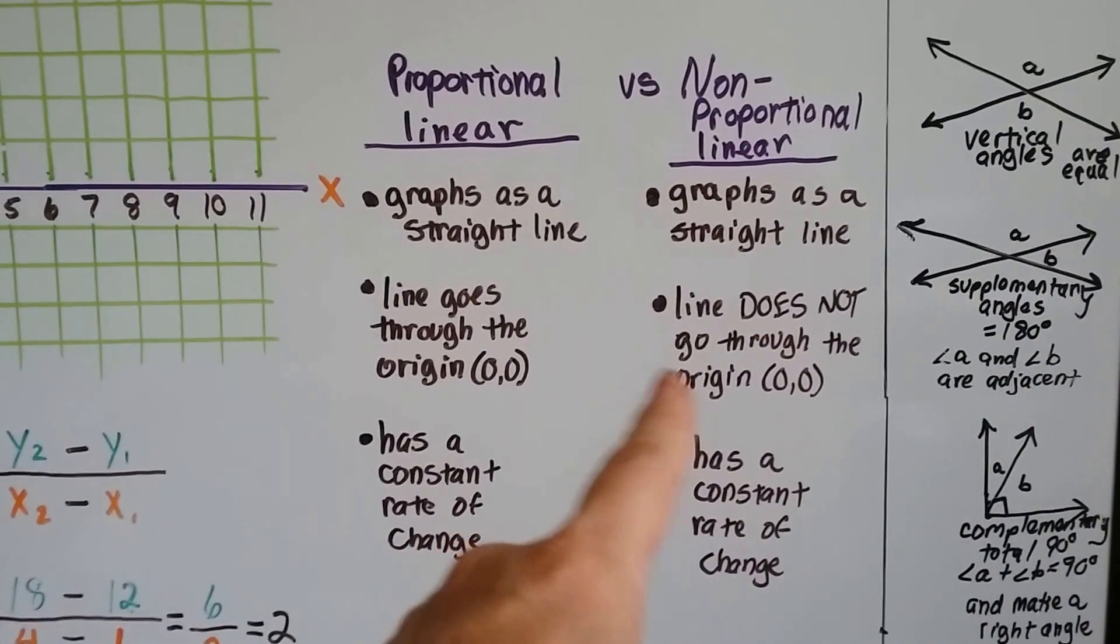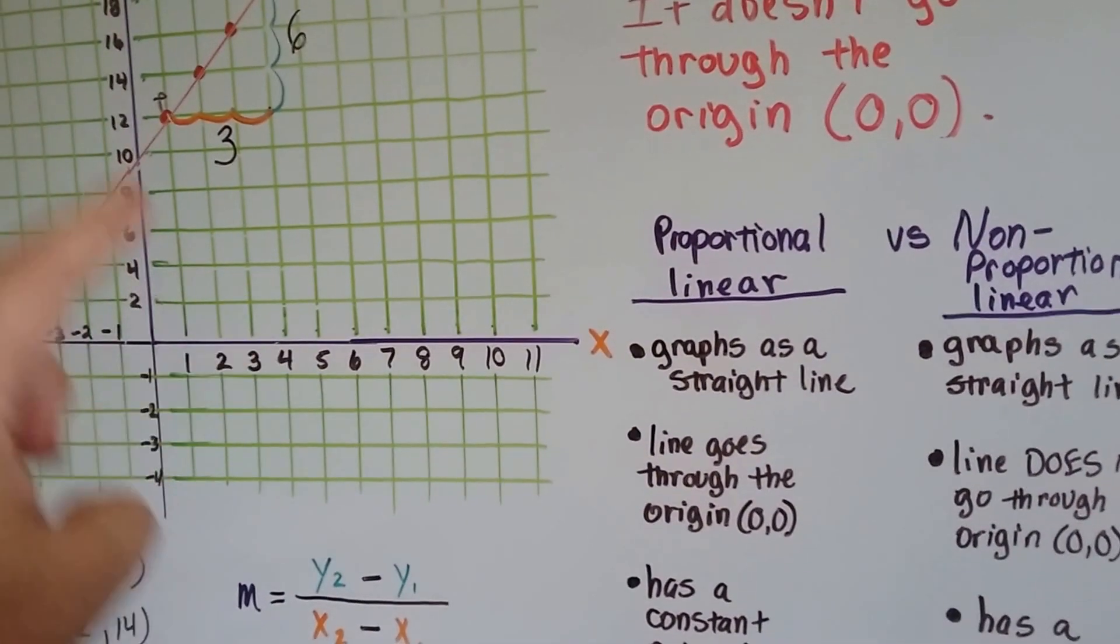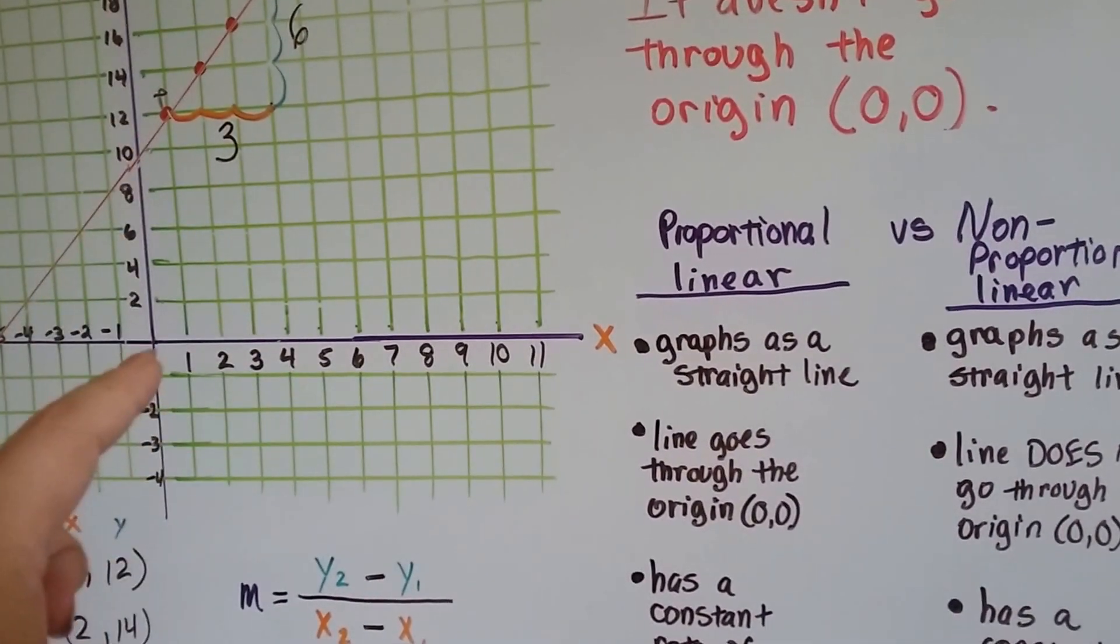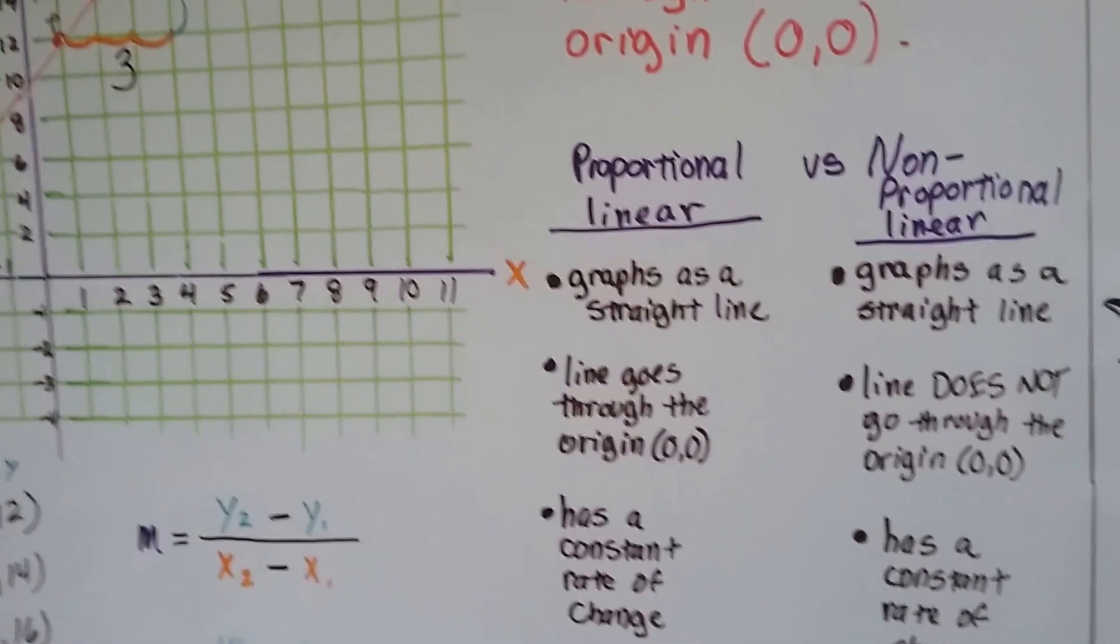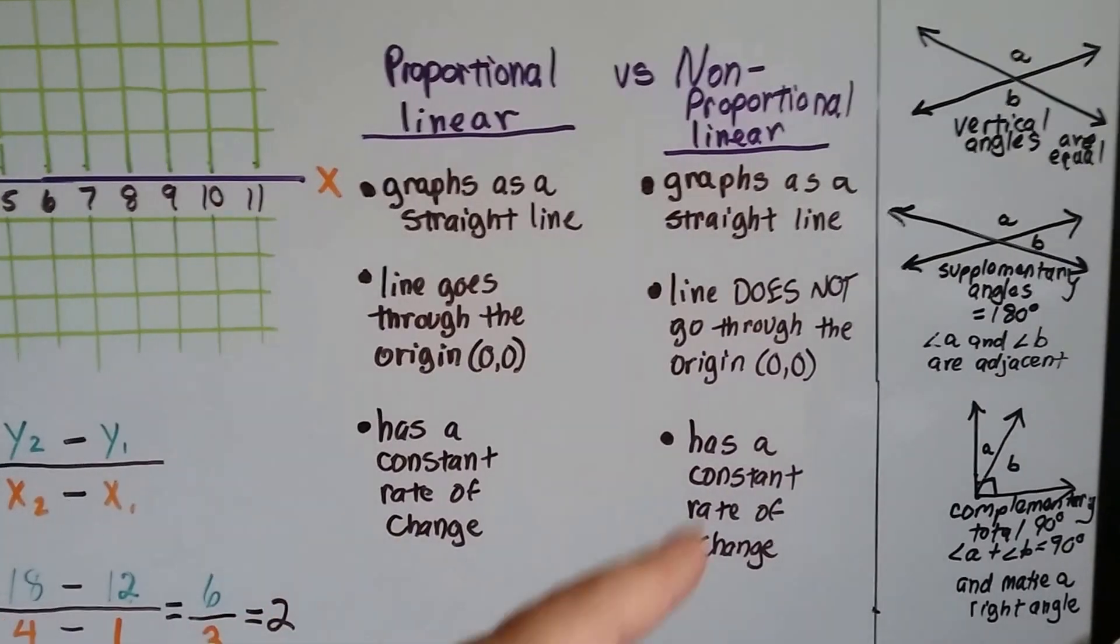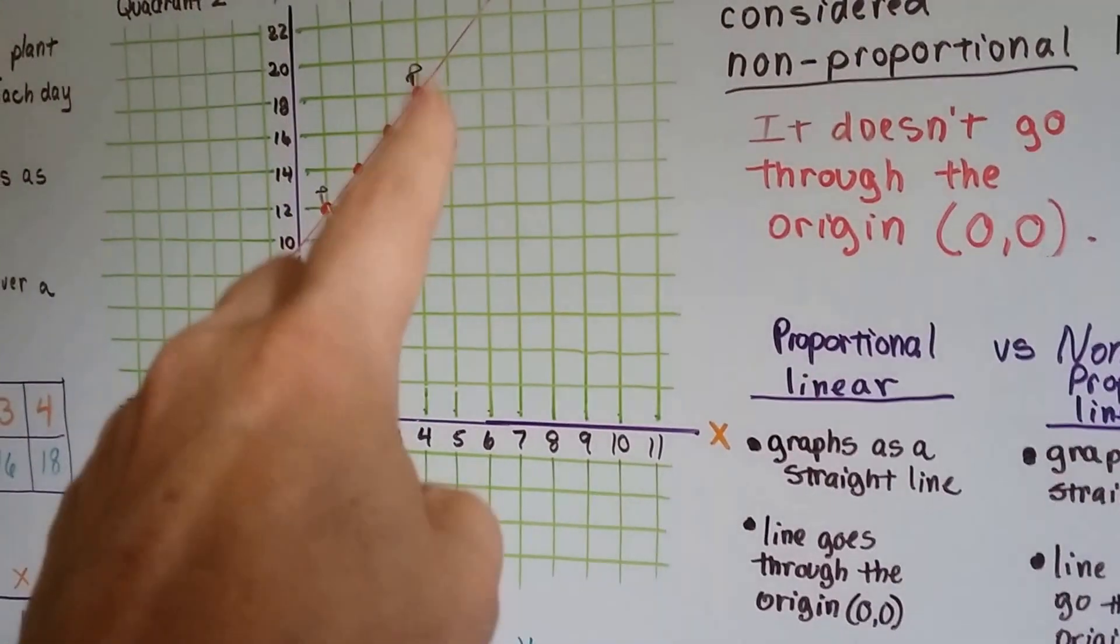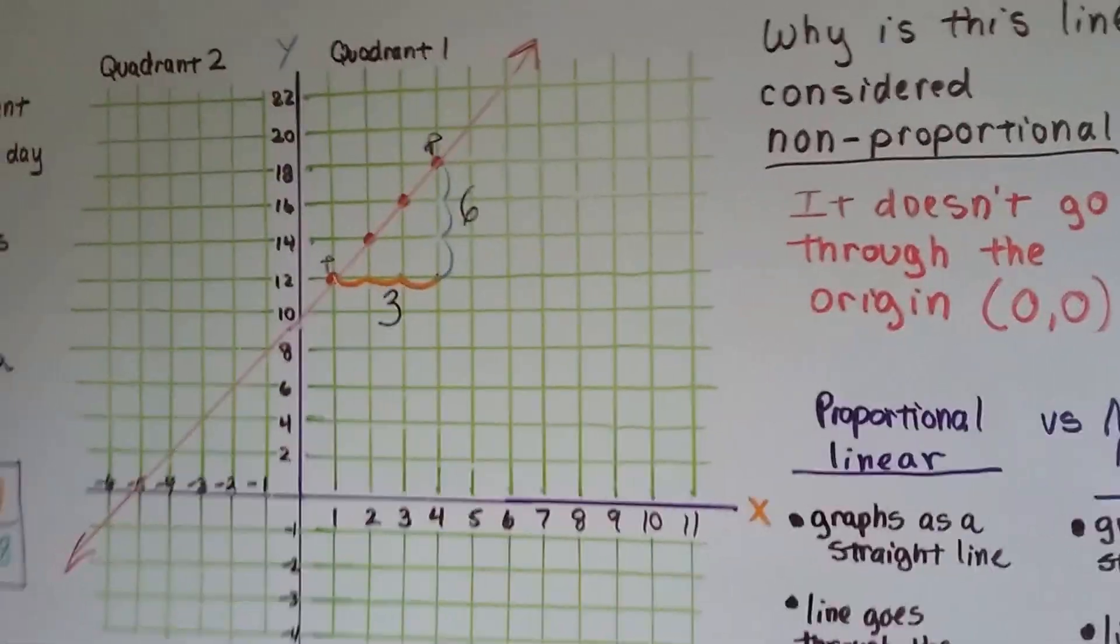But the non-proportional doesn't. It doesn't go through 0, 0. It hits the y line at a different point than 0, 0, like here it's hitting it at 10. The proportional one has a constant rate of change, and the non-proportional one has a constant rate of change. It's changing two for each time for the steepness, for the slope.